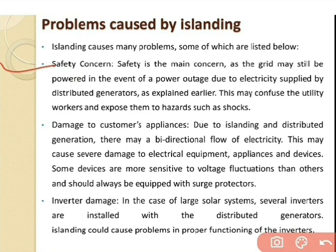The third problem is inverter damage. We already know that the inverter is used to convert from DC to AC. In the case of a large solar system, several inverters are installed with the distributed generator, which may cause problems to the inverter side.